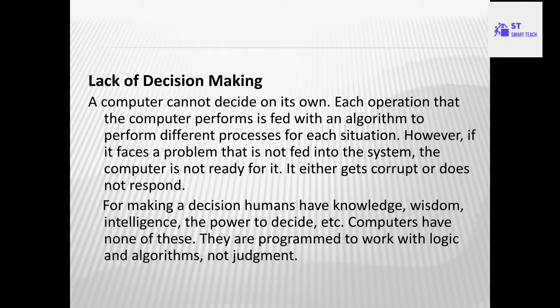The user has to give instructions to the computer to face those problems. If a problem occurs to a human, the human has knowledge, wisdom, and intelligence to solve their own problems. But a computer cannot decide on its own. They are programmed to work with logic algorithms, not judgment. So a computer cannot decide what is right and what is wrong.